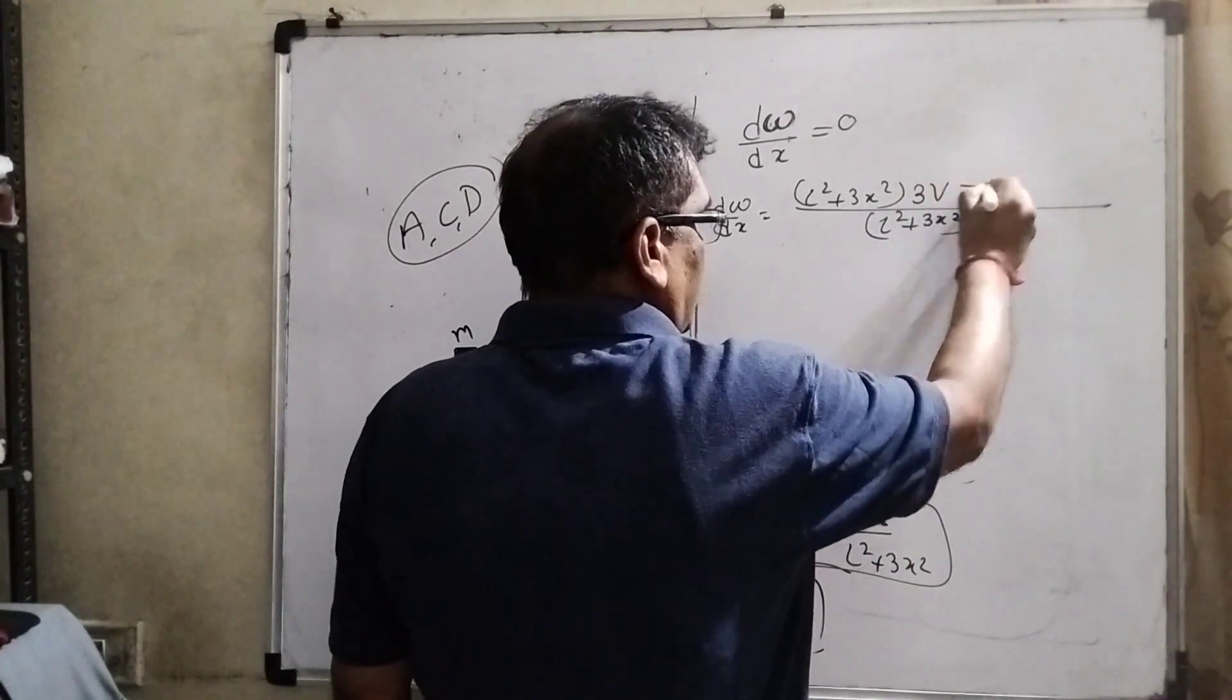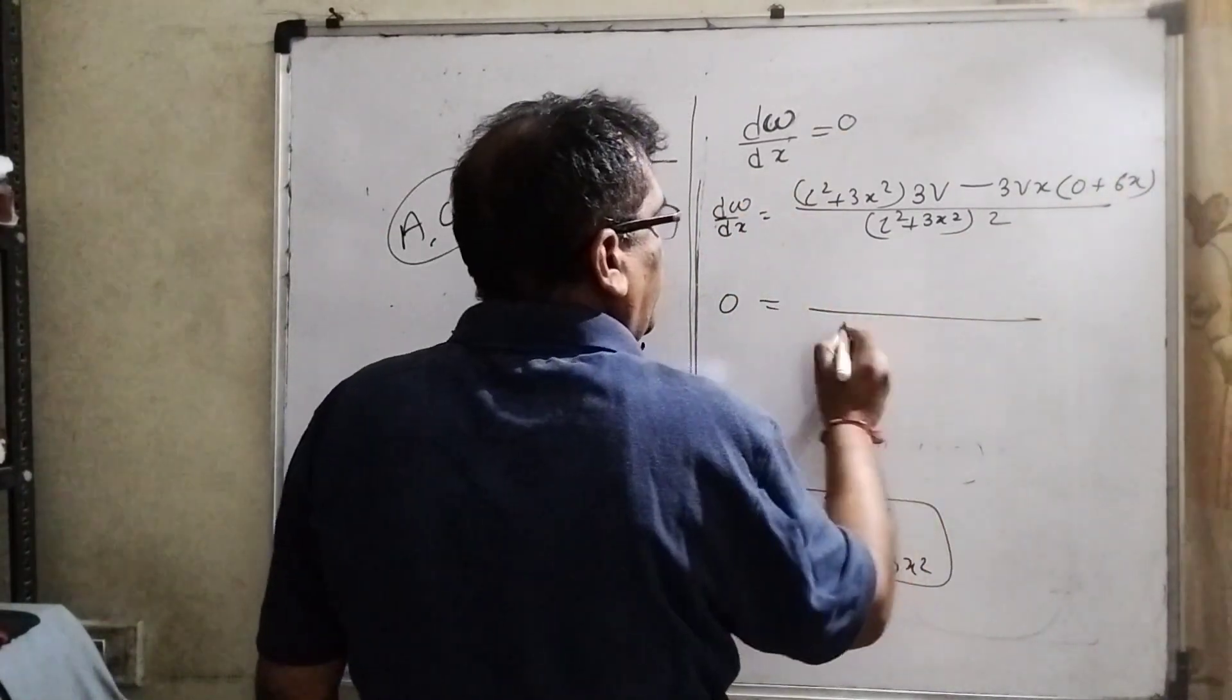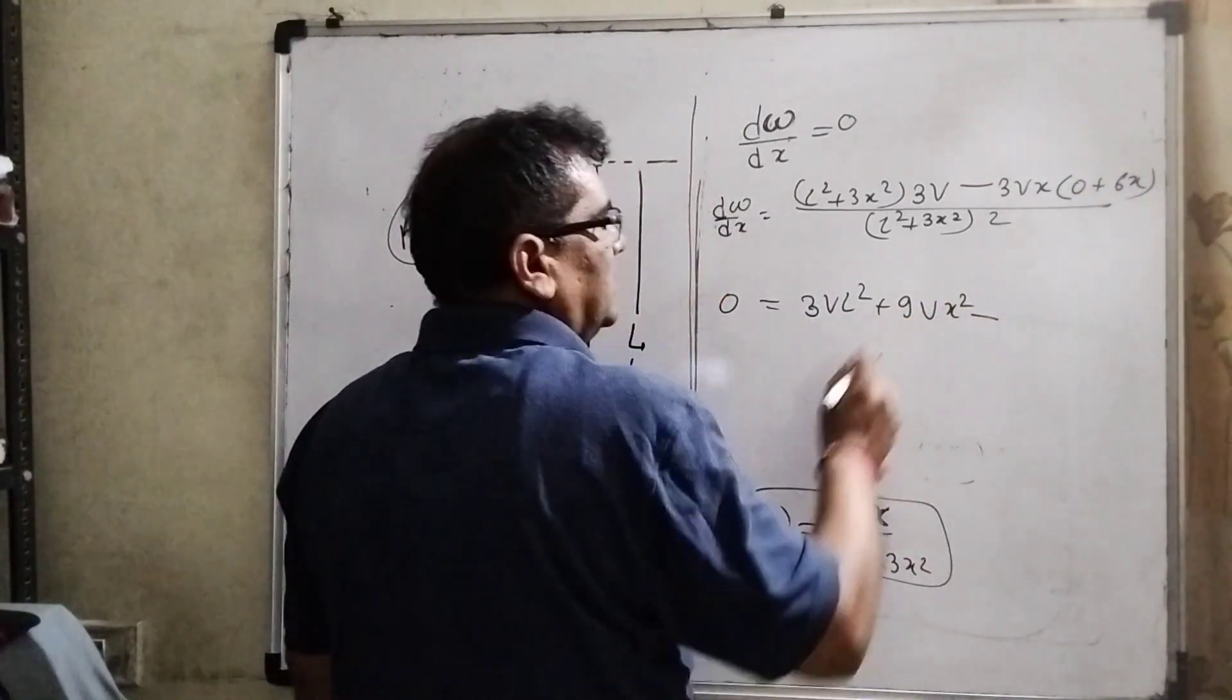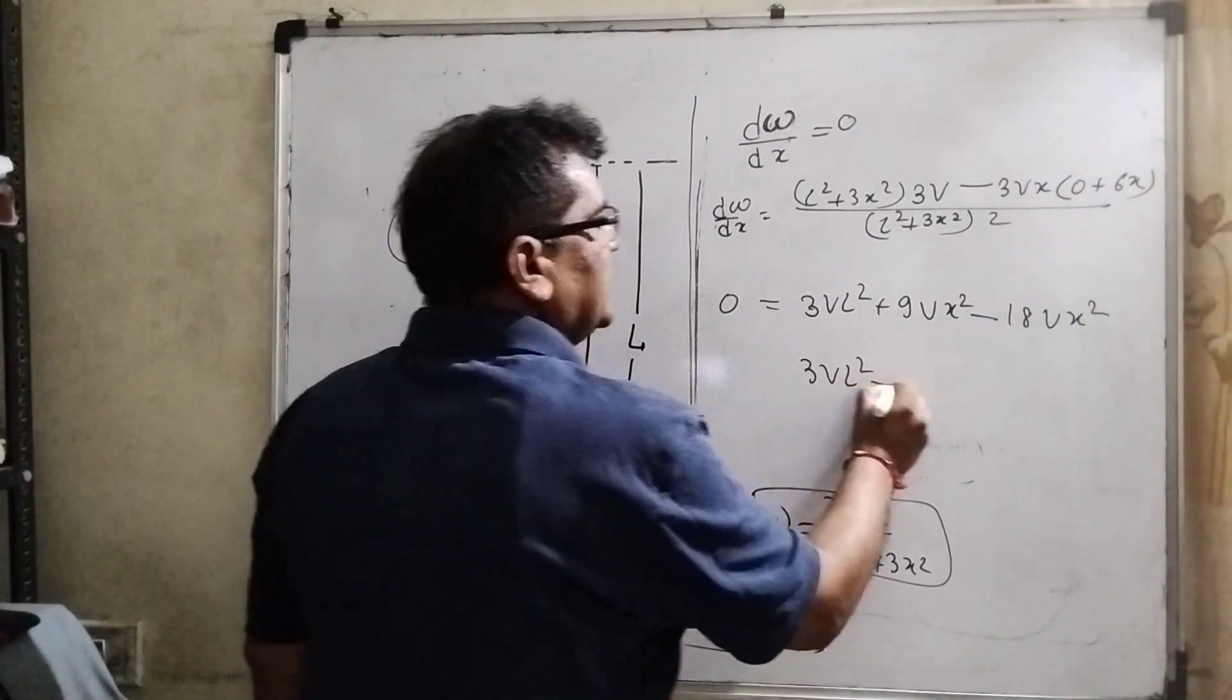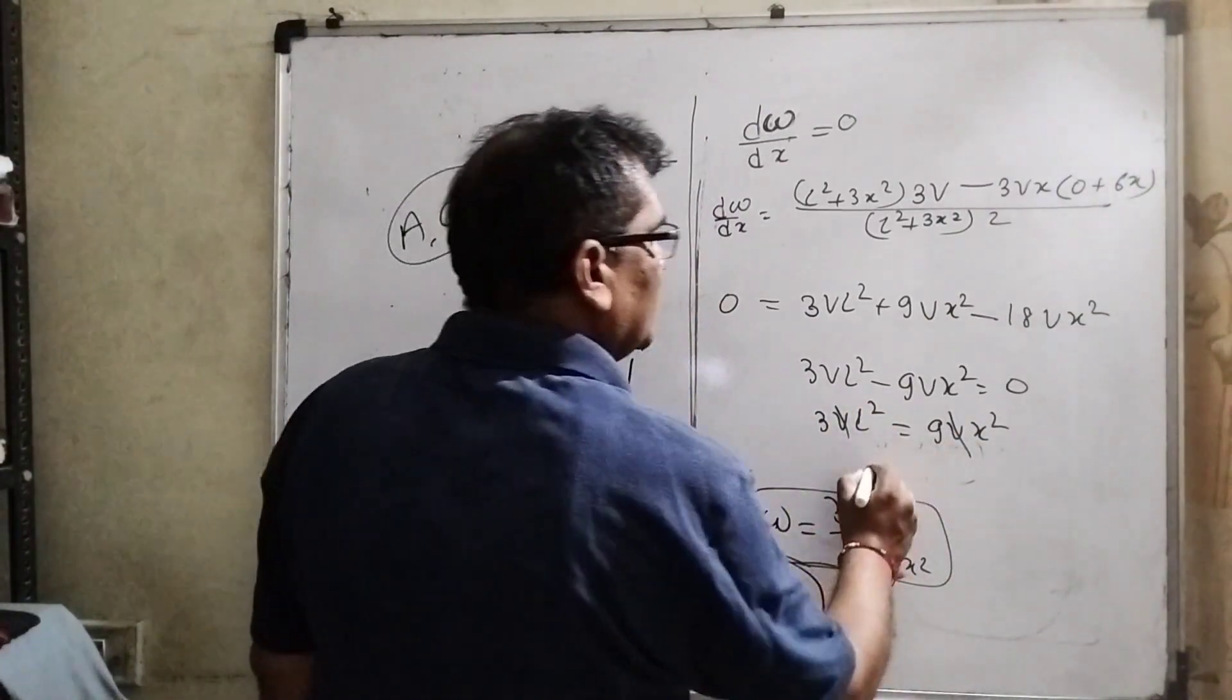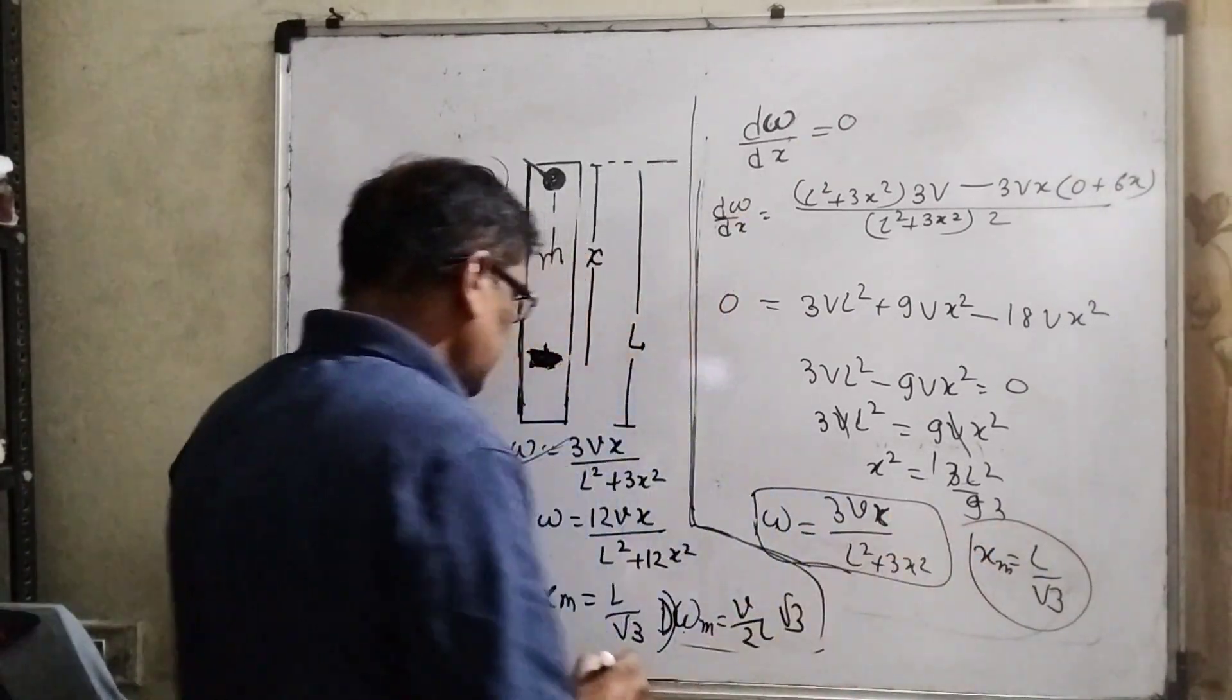3vx² and the differentiation of 3vx. Then 3v minus 3vx, and differentiation 0 + 3 to 6x. dω/dw equal to 0, equals 0. This will be cancelled out because multiply cross multiplication will get 0. So 3vL² which is 9vx² minus 6 is 18vx². It means 3vL² and minus 9vx² equals 0. Then 3v we cancel out. Then x² can be written as 3L²/9, even the 3 divided by 9. Then x equals L by root 3, x_m. So our answer - you can see the third answer is matching our answer.